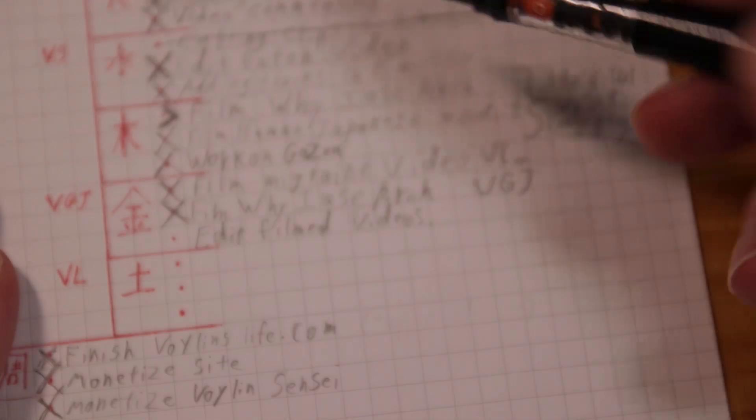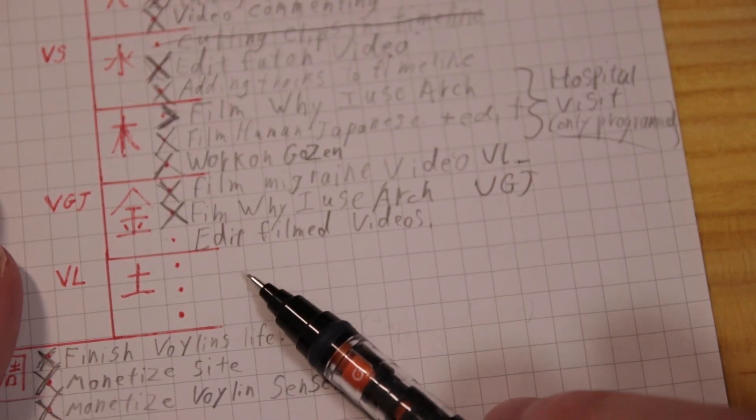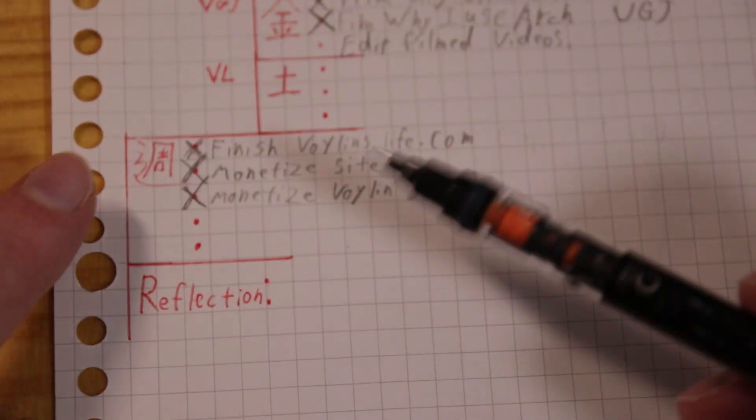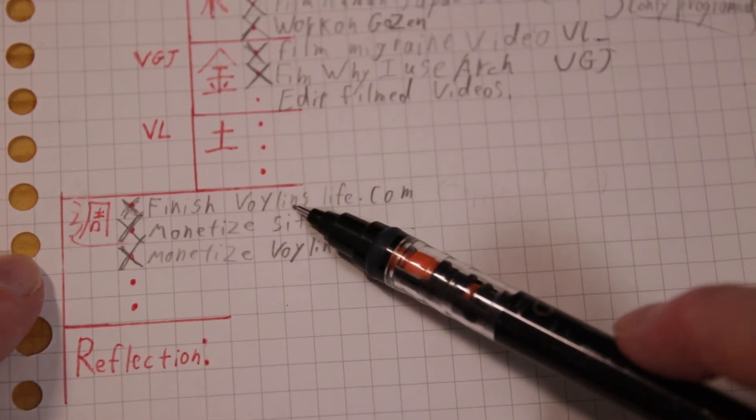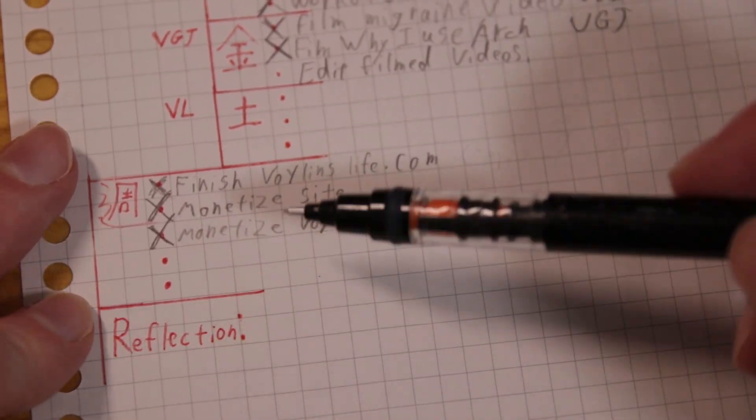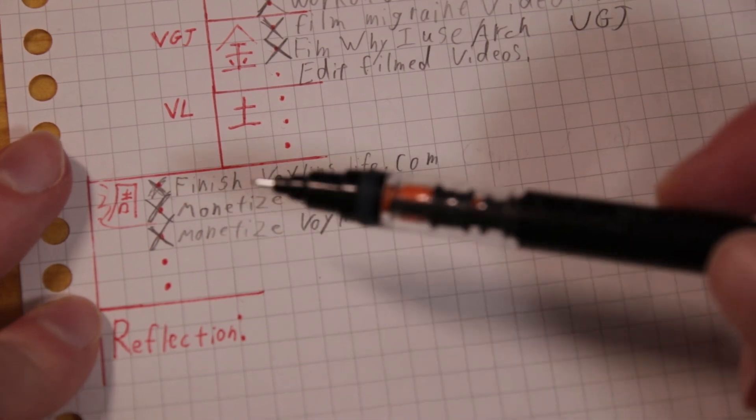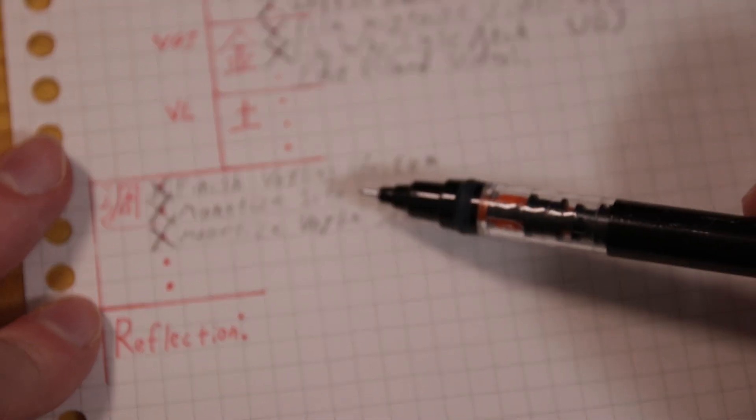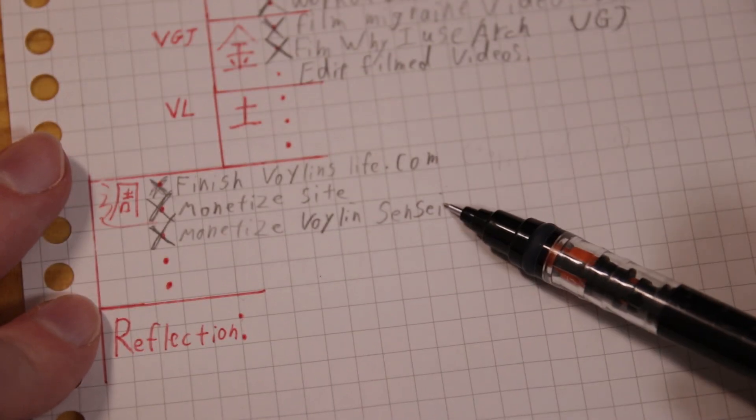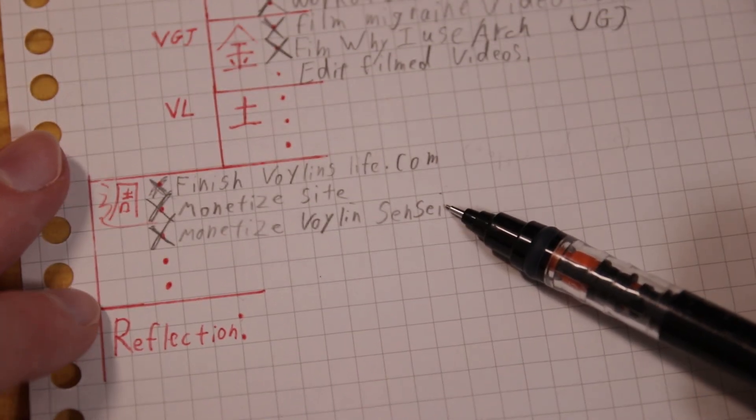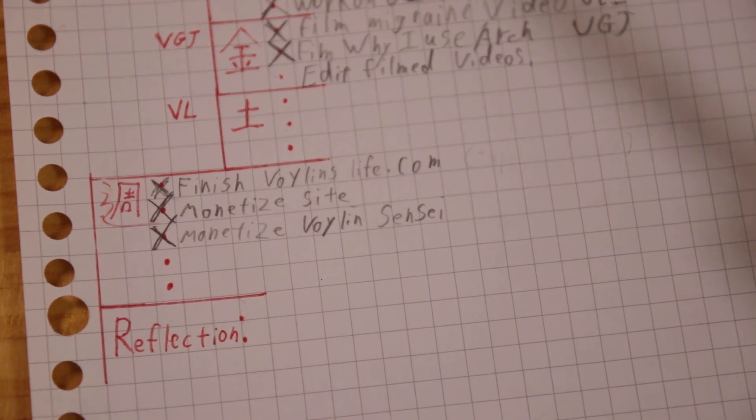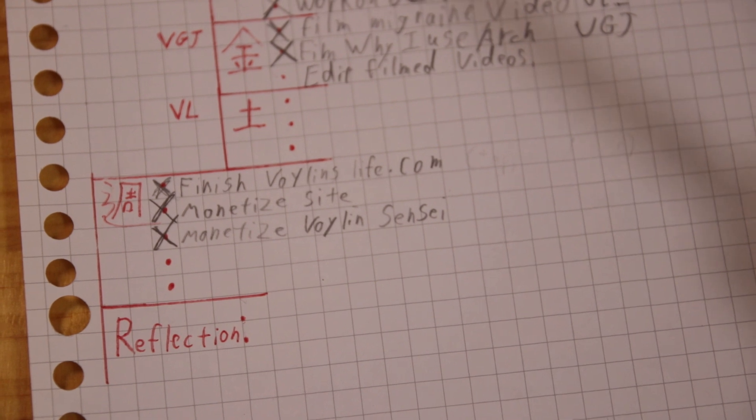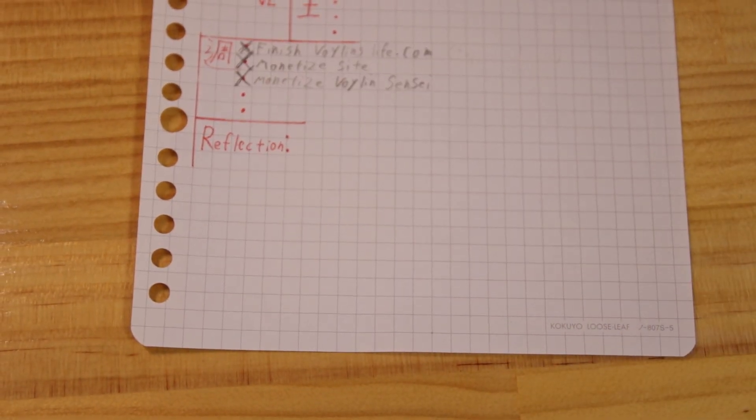This is basically how I make my schedule. Every morning, I sit down in the evening and I start writing what tasks do I really need to do tomorrow. And then I have my weekly tasks. I give myself maximum five. Every day, maximum three. And for the entire week I give myself five tasks which can take a little bit longer. By example, finishing my website, monetizing the site with AdSense, and monetizing this Voilene Sensei YouTube channel which recently got monetized. Yay! I'm earning about 50 yen a day. And then my reflection part. So let's go over to the main schedule again.